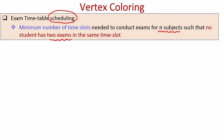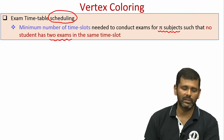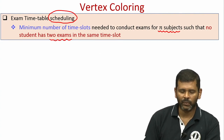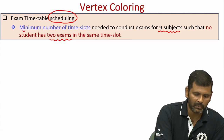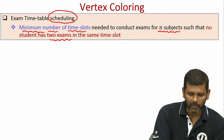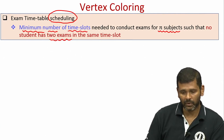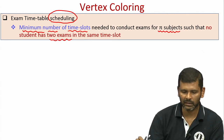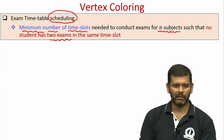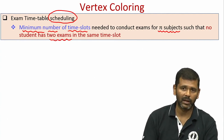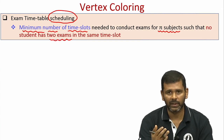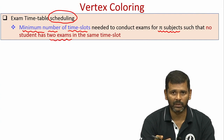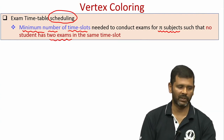One obvious way of scheduling is to schedule one exam in exactly one time slot, which will require n time slots. But we do not want to do that because that will be an overkill and a wastage of resources. Instead, we would like to find the minimum number of time slots where multiple exams can be conducted in the same slot without violating the condition that no student has two exams in the same time slot.